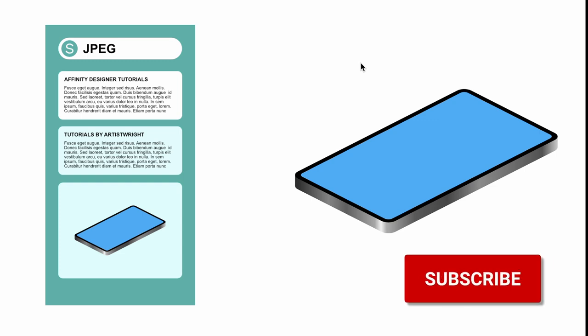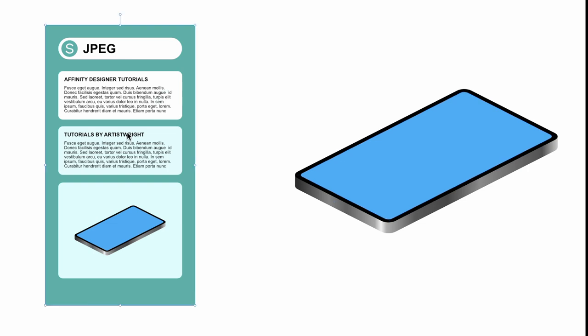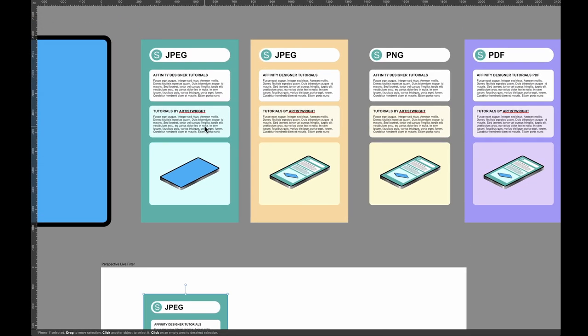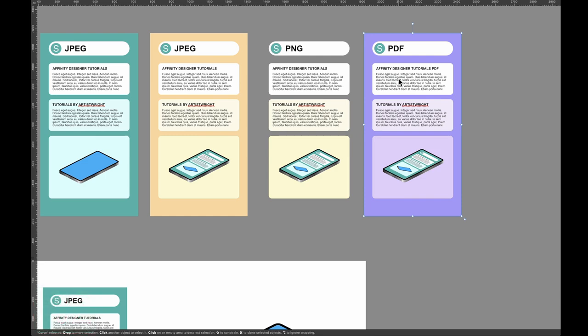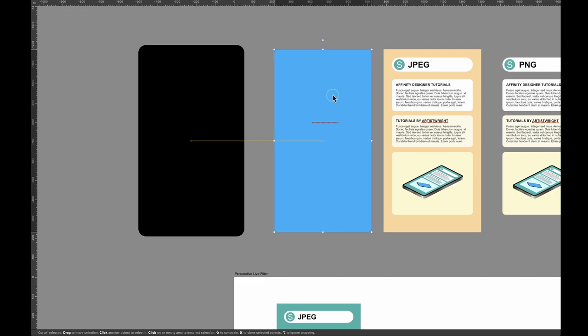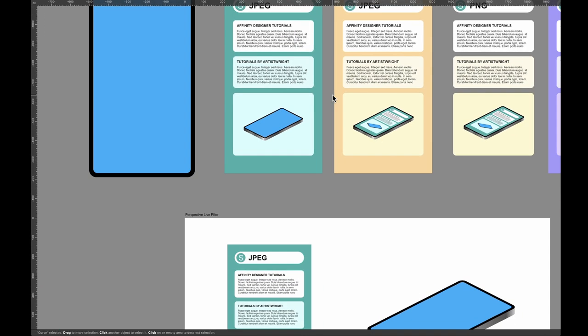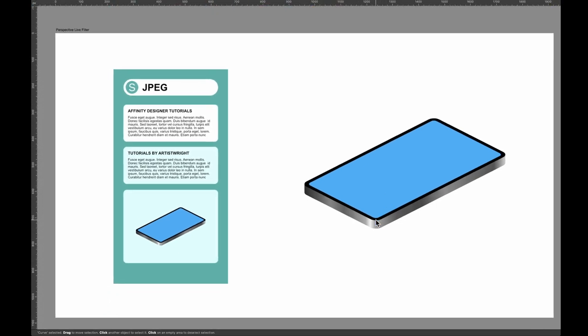Our first real mock-up uses a smartphone I made in Affinity Designer. Say I'm designing an app and I want to see what the front page looks like. I've made a few app pages and exported them as JPEG, PNG, and PDF. I started with a flat front-facing phone, made the pages exactly the same size as the screen, then used the isometric grid to create this angled shape. I have an isometric tutorial — check that one out.